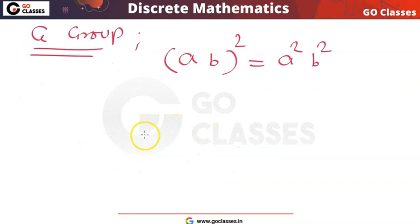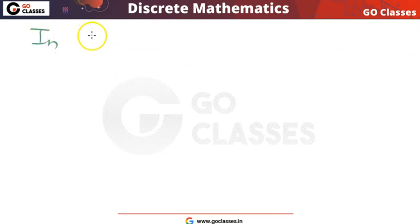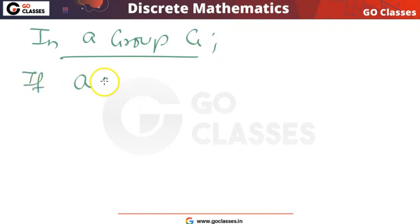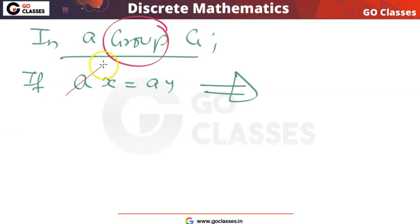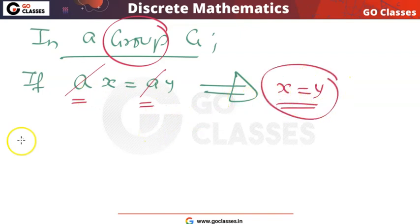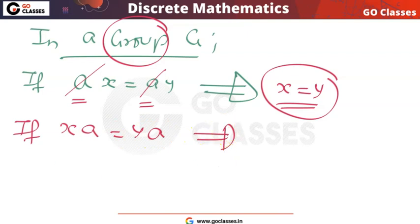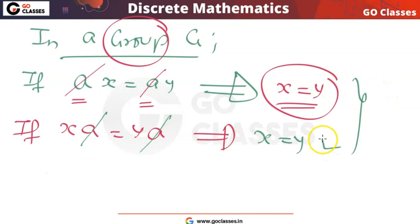We can solve this question by two methods. In the first method, we use the fact that in a group, left cancellation and right cancellation are allowed. If ax = ay, then we can cancel a from the left to get x = y — this is left cancellation. Similarly, if xa = ya, we can cancel a from the right to get x = y — this is right cancellation.